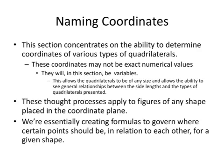This is going to allow us to see the general relationships between side lengths and also the types of quadrilaterals that are presented. These thought processes are going to apply to figures of any shape placed in the coordinate plane, whether they're quadrilaterals, triangles, or any sort of polygon. We're essentially creating formulas to govern where certain points should be in relation to each other for a given shape.